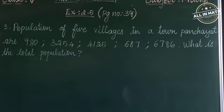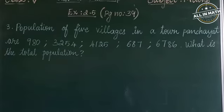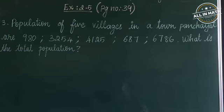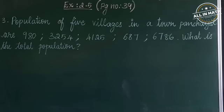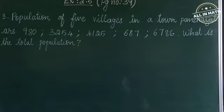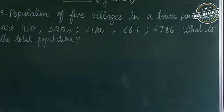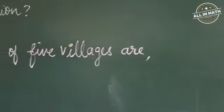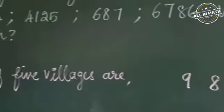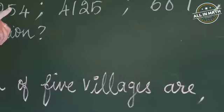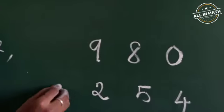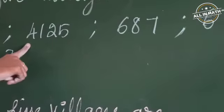Children, look at the third sum. The population of 5 villages in a town panchayat are 980, 3,254, 4,125, 687, and 6,786. What is the total population? To get the answer, we are going to add all the given numbers and write them one by one. The first village population is 980. The second village population is 3,254, so I am going to write it from the 1's place: 4, 5, 2, 3.